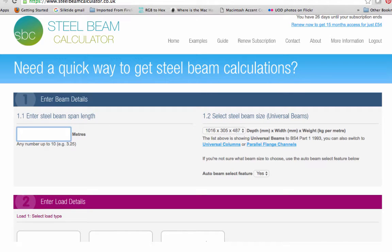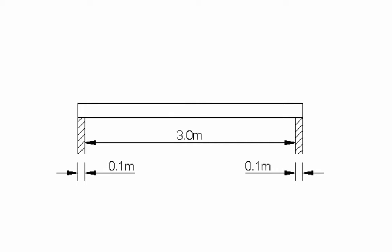Section 1 of the calculator asks for your basic beam details. You first need to enter the effective span length of your beam. This is the distance from the centre of one end bearing to the centre of the other end bearing.